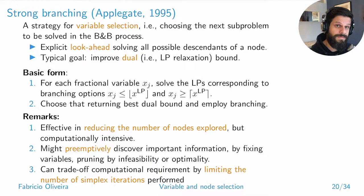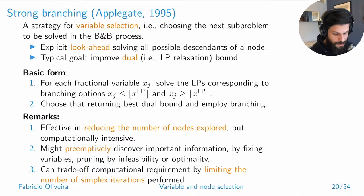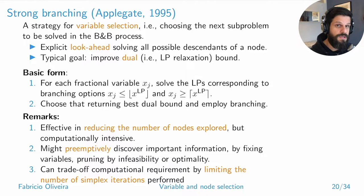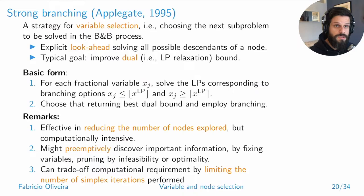It sounds like a lot of work, and it is, but it can be done efficiently and it's the underlying standard method in any MIP solver. It's computationally intensive, so you have to be careful to maximize the reuse of information from sub-problems. It's very effective in terms of reducing the number of nodes explored. Some strong branching approaches limit the number of simplex iterations allowed when testing branching directions instead of solving sub-problems to optimality.